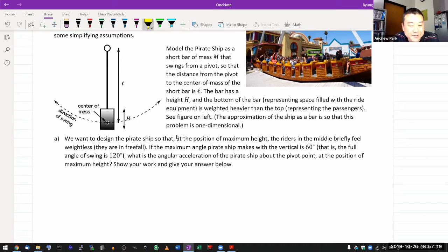We want to design the pirate ship so that at the position of maximum height, the riders in the middle briefly feel weightless. That seems like an important piece of information so we'll keep that. If the maximum angle the pirate makes with the vertical is 60 degrees, theta max equals 60 degrees. What is the angular acceleration of the pirate ship about the pivot point at the position of maximum height?